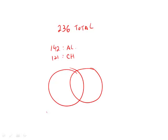In this circle we'll have the algebra students, and in this one we'll have the chemistry students. Now we want the greatest possible number in the middle. We know that this total number—this plus this—has to equal 142.